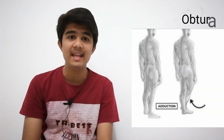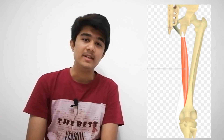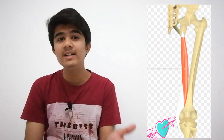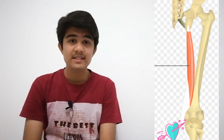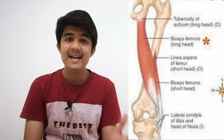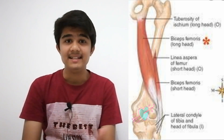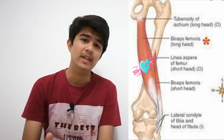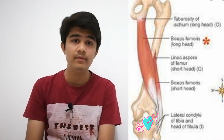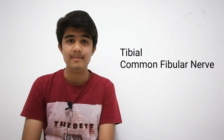The common nerve supply of the medial compartment muscles is the obturator nerve, and the common action is hip adduction. Now, the posterior compartment: semitendinosus originates from the ischial tuberosity and inserts medial to the tibial tuberosity. Semimembranosus also originates from the ischial tuberosity and inserts on the tibia. Biceps femoris has two heads - long head and short head. The long head originates from the ischial tuberosity and inserts on the fibula; the short head originates from the linea aspera and inserts on the head of the fibula. Biceps femoris has two nerve supplies: the long head is supplied by the tibial nerve and the short head by the common fibular nerve.